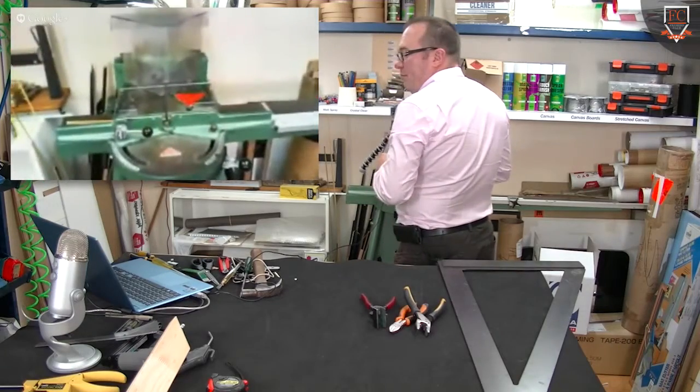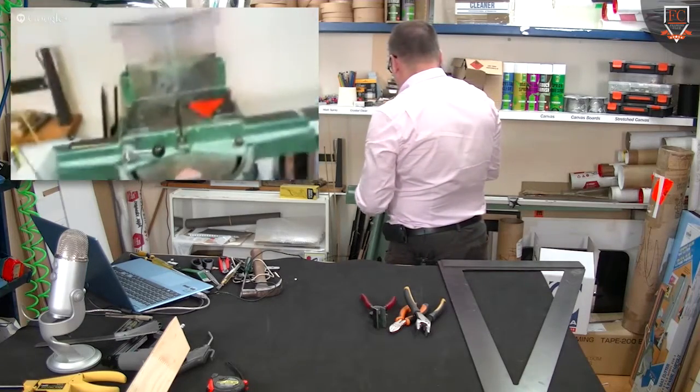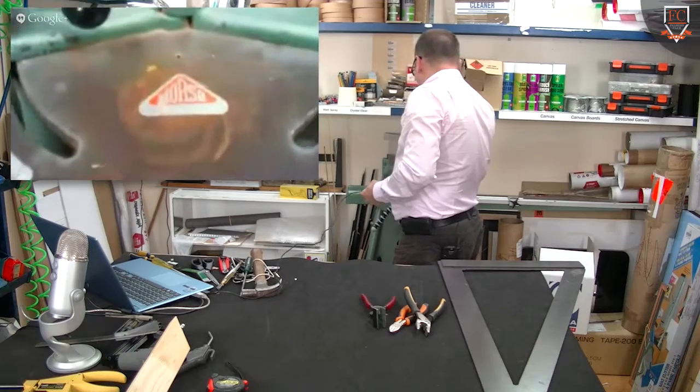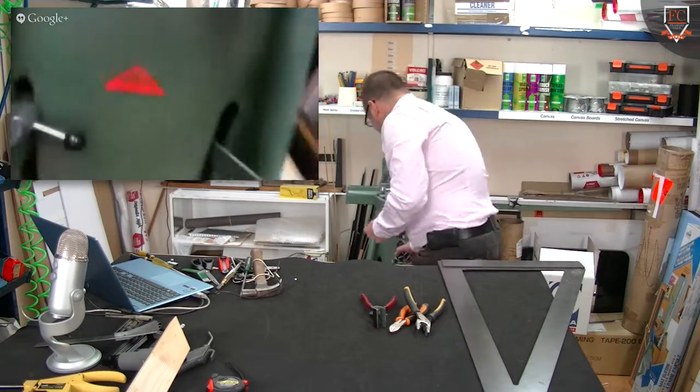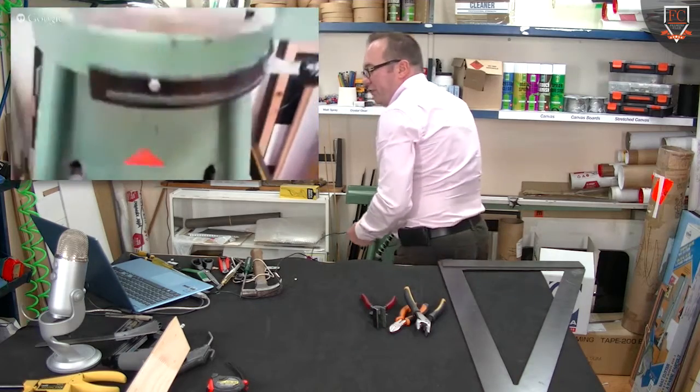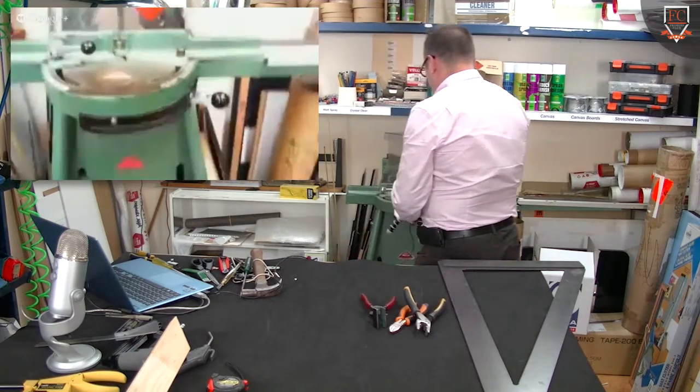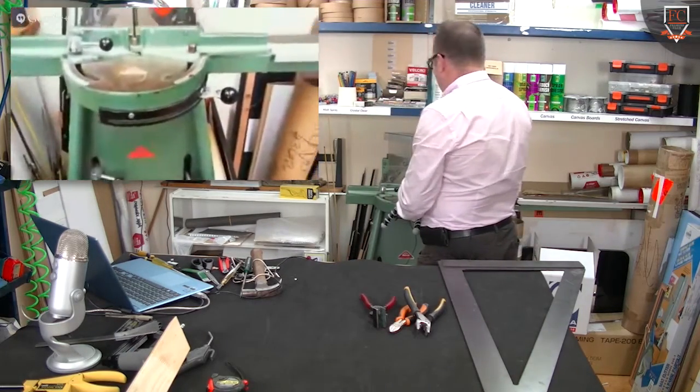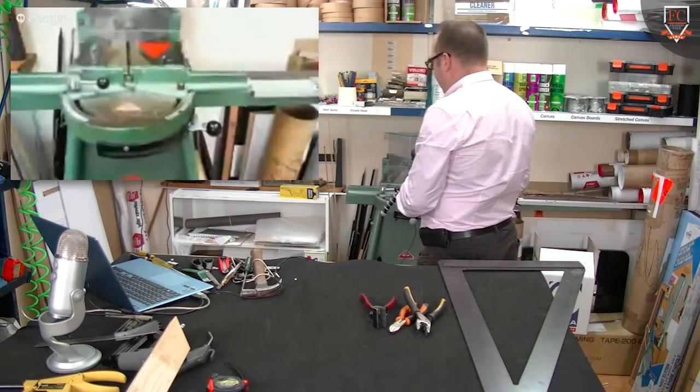So this is one of the Morso Mitre guillotines. Little serial number up on the top, here down on the bottom Morso. Now Morso was the first company in Denmark to make or invent the Mitre guillotine.